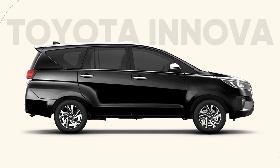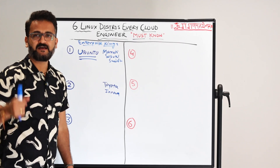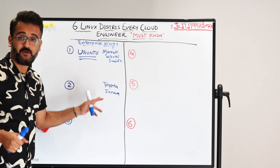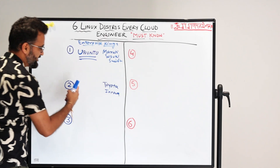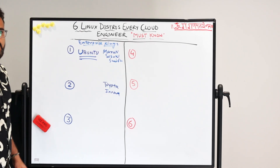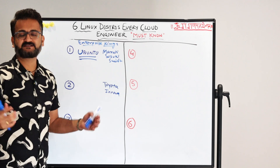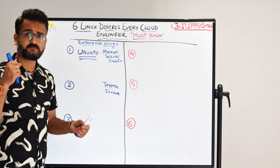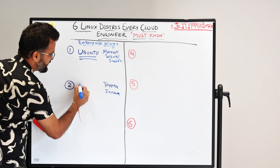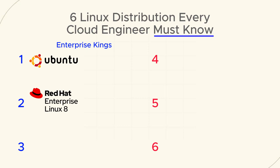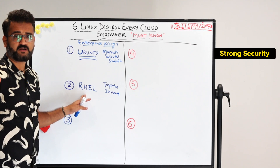Coming to our second enterprise choice — this is the Toyota Innova. You might have seen that in IT industries whenever client visits happen, they use Toyota Innova for corporate customers, not a Maruti Suzuki Swift. That's what this particular version is. When you are talking about enterprise use cases for big customers like ICICI, HDFC, big banks which need security and proper support, you need to go for a paid version — RHEL, Red Hat Enterprise Linux.